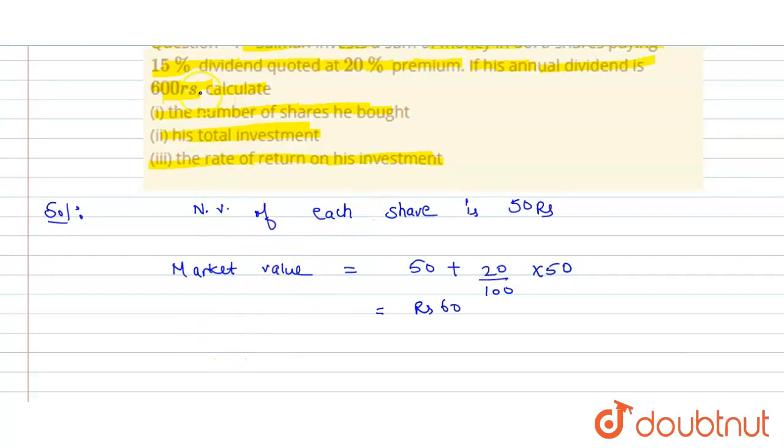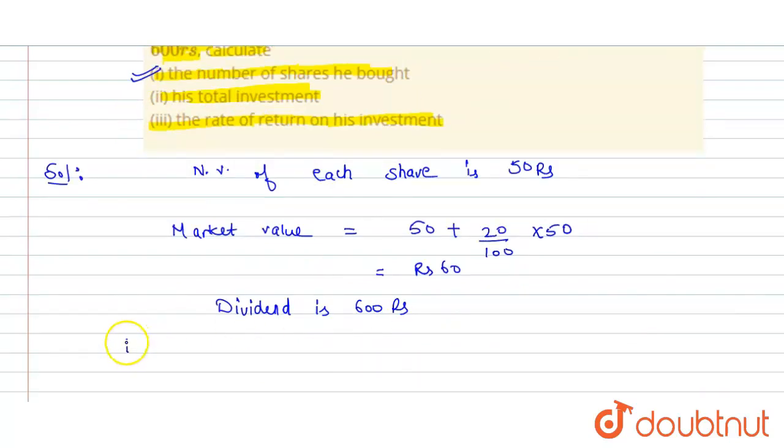Now, we have given dividend is 600 rupees. So first we need to find the number of shares he bought. For the first question, we know that dividend equals...